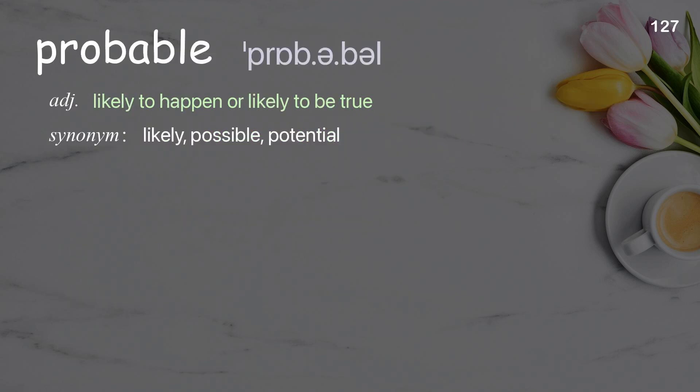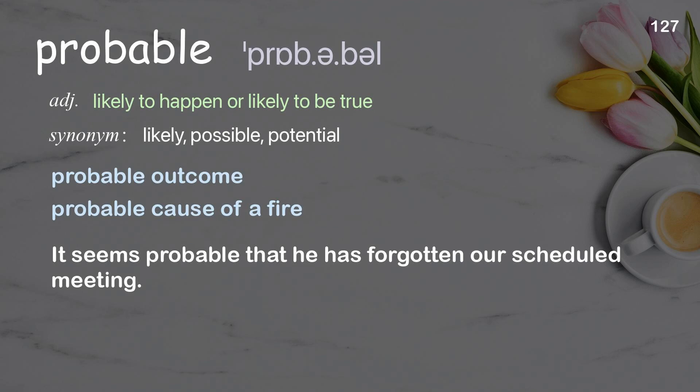Probable: likely to happen or likely to be true. Examples: probable outcome, probable cause of a fire. It seems probable that he has forgotten our scheduled meeting.